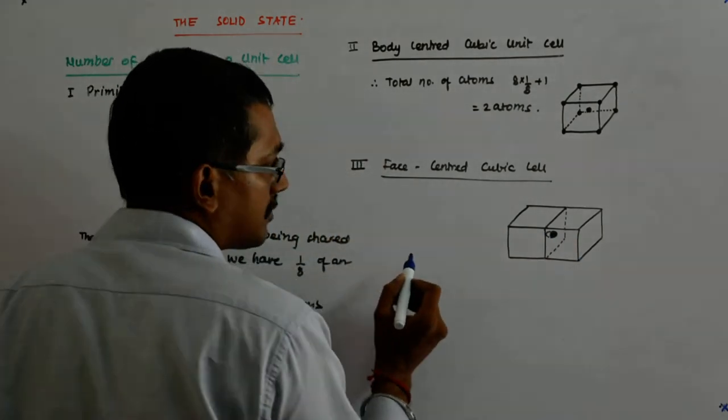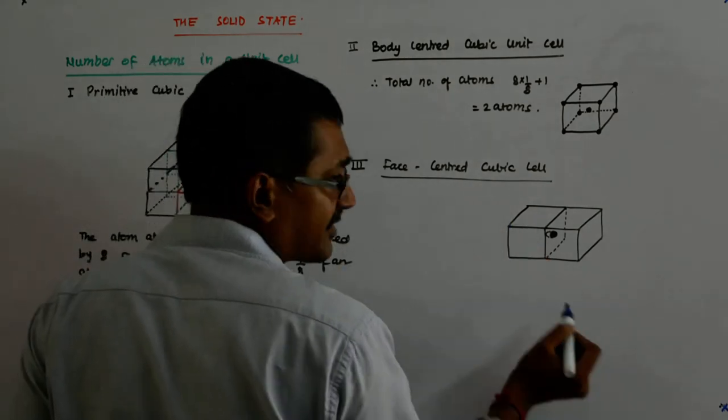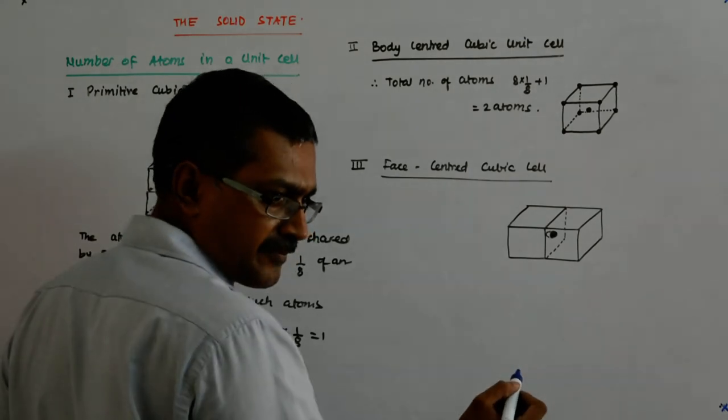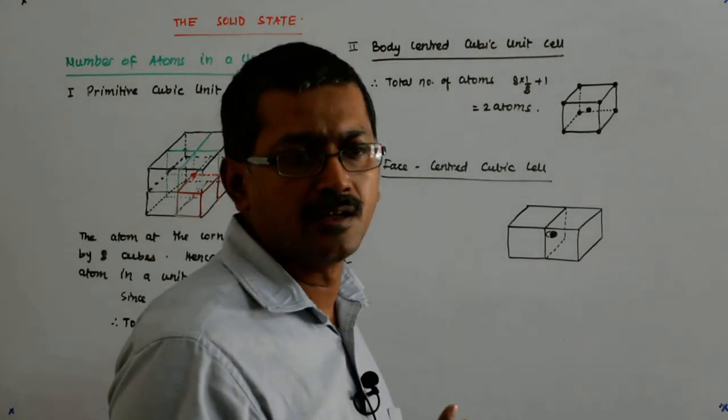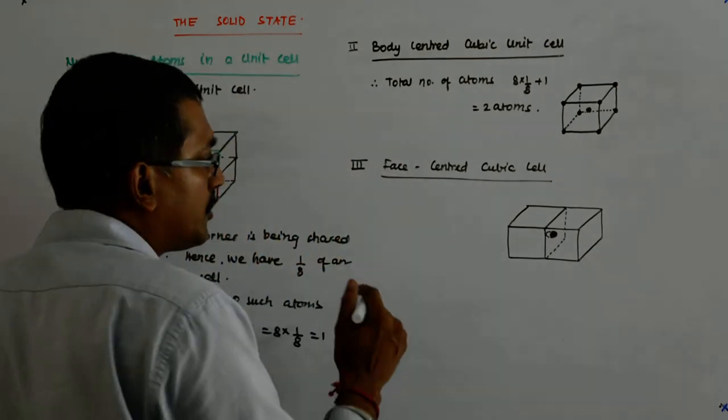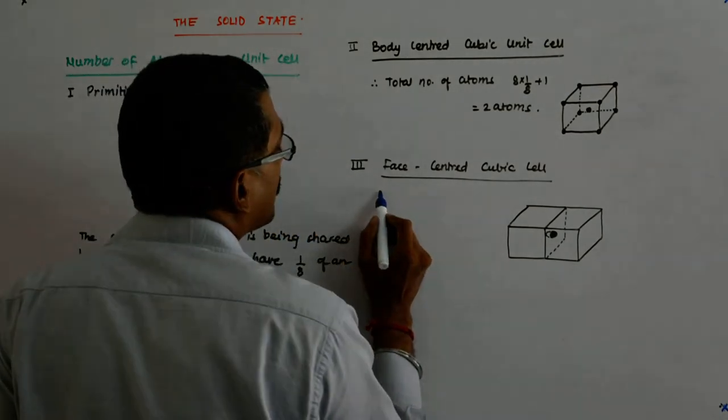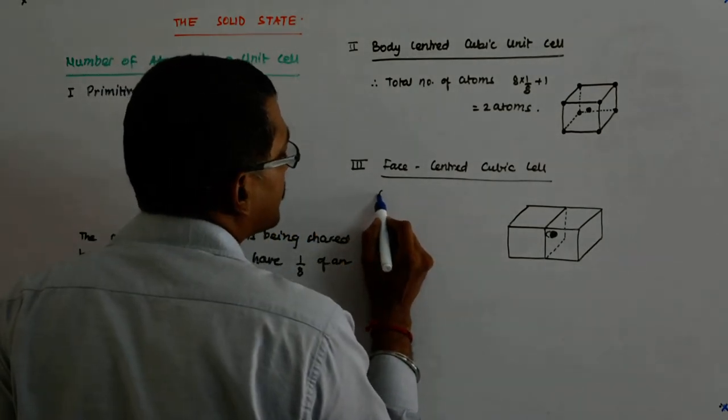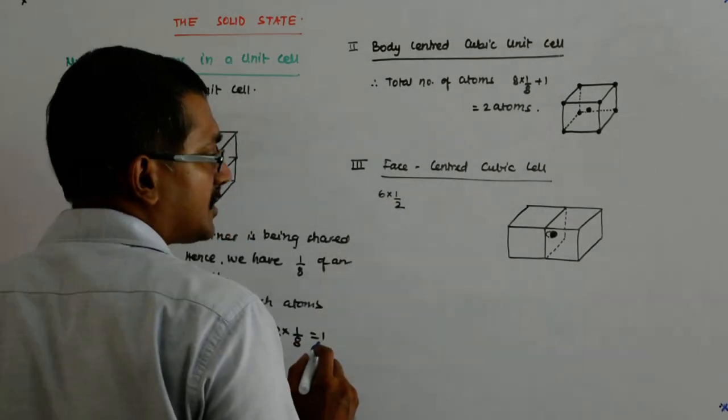So, yes, it's a hemisphere. And there are 6 such. Fine? Face-centered, when you say face-centered, that means all the faces are having one atom and half of it is possessed by you, that means by the unit cell we are talking about. So, the total number is how much? 6 into half.